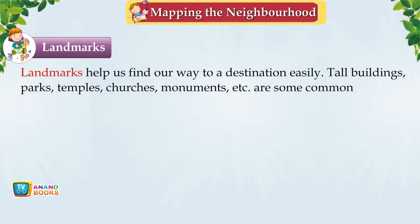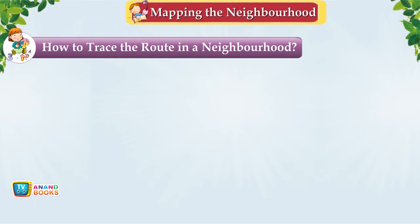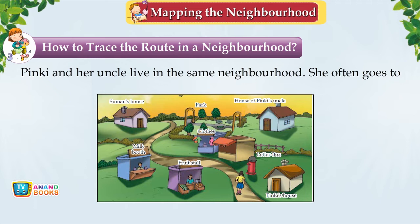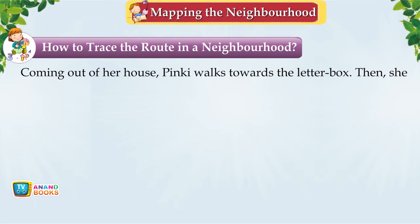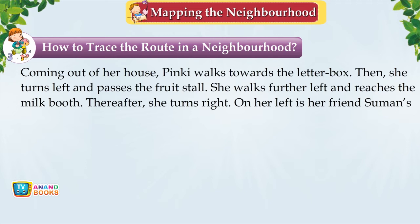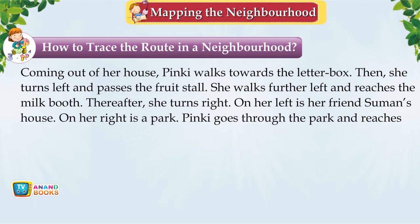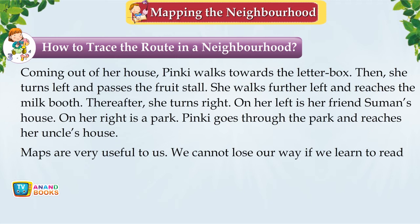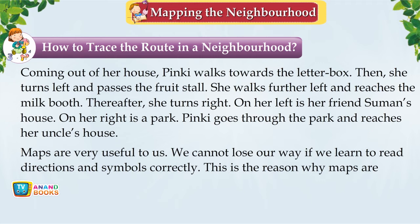How to Trace the Route. Pinky and her uncle live in the same neighbourhood. Coming out of her house, Pinky walks towards the letterbox, then turns left and passes the fruit stall, walks further left to the milk booth, then turns right. On her left is her friend Suman's house and on her right is a park. She goes through the park and reaches her uncle's house. Maps are very useful — we cannot lose our way if we learn to read directions and symbols correctly.